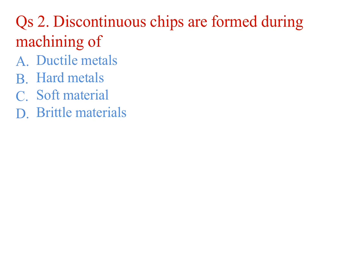Discontinuous chips are formed during machining of: A. ductile metal, no; B. hard metals, no; C. soft material, no; D. brittle materials, yes.